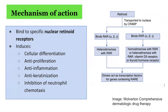In terms of the mechanism of action of retinoids, these work by binding to specific nuclear retinoid receptors. Their biological effects include cellular differentiation, anti-proliferation, anti-inflammation, anti-keratinization, and inhibition of neutrophil chemotaxis. The retinoid is transported to the cell nucleus via cytosolic retinoic acid binding protein, or CRABP. When in the nucleus, it can bind to the retinoid receptor — there are essentially two members: RAR and RXR.